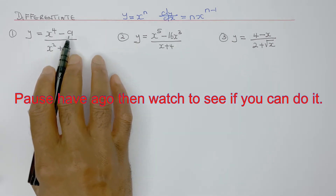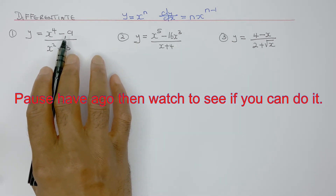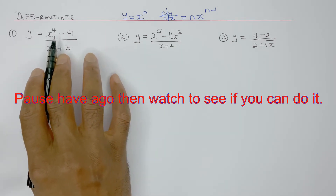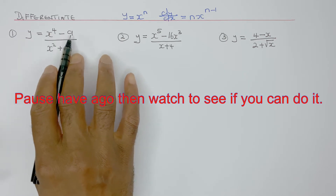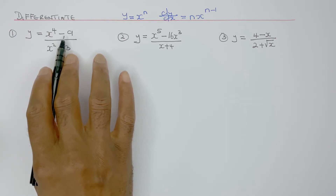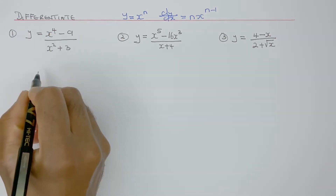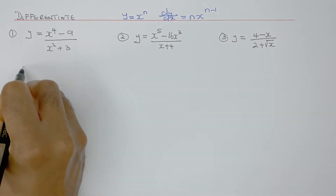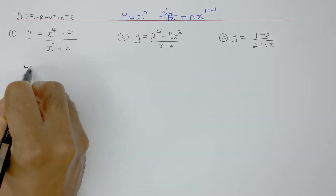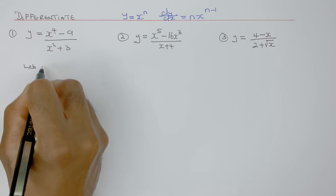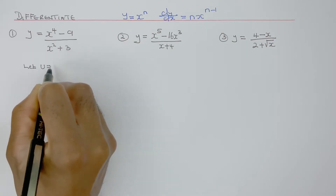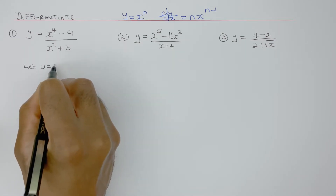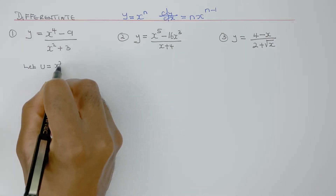The x to the power 4 minus 9 has something very common to the difference of two squares. So if I let u equal x squared.